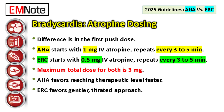Let's begin with bradycardia, the slow heart rates. First-line treatment is often atropine, and right away we see a difference in that initial dose. The AHA guideline recommends starting with 1 milligram of intravenous atropine, and you can repeat that every three to five minutes.